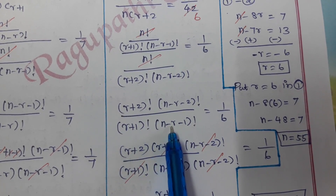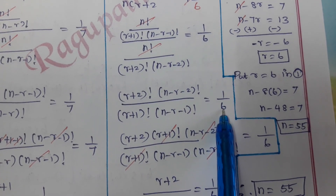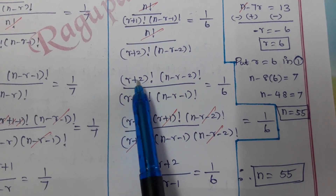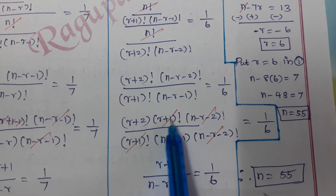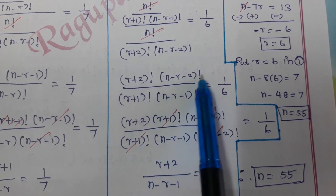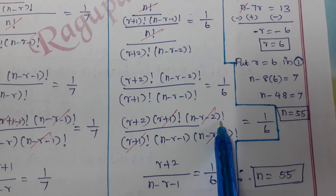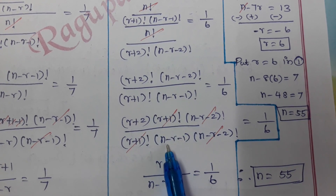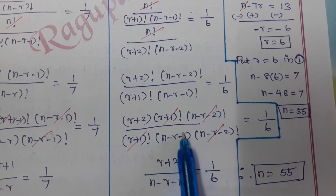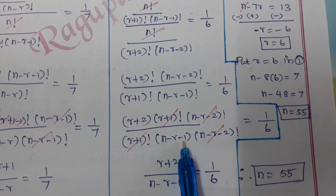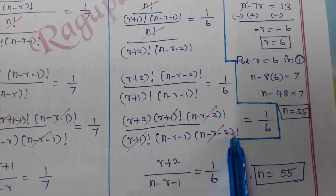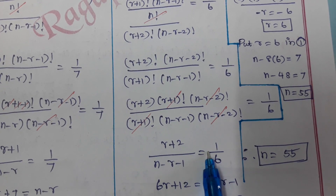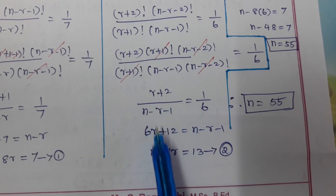Extending (r+2)! as (r+2)(r+1)! and (n−r−1)! as (n−r−1)(n−r−2)!, we cancel r+1 factorial and (n−r−2)! terms. The remaining expression gives (r+2)/(n−r−1) = 1/6, so 6r + 12 = n − r − 1. This is equation number 2.